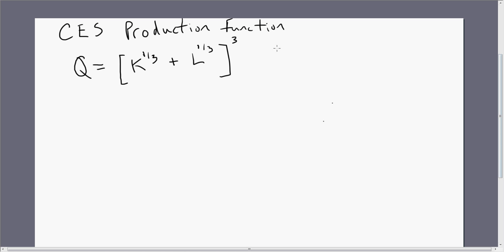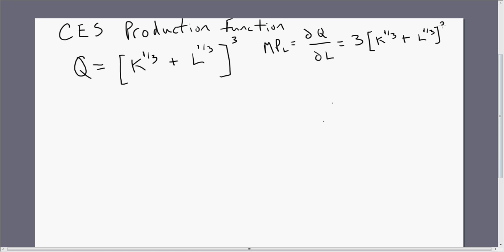The first thing we're going to do is calculate a couple of marginal products. The marginal product of labor we'll calculate by taking the partial derivative of this production function with respect to labor, and here we're going to get a result that looks something like this. At the end here, if it's hard to see, this is L raised to the minus two-thirds power.